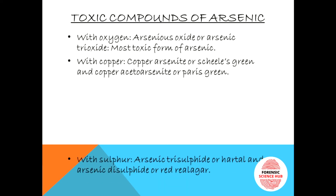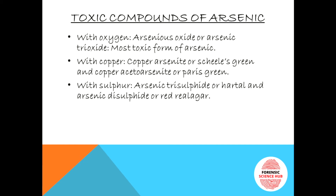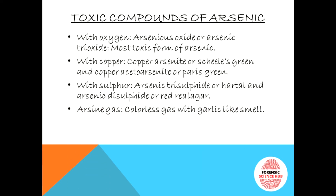With sulfur, arsenic forms arsenic trisulfide and arsenic disulfide. Arsenic trisulfide is also known as hartal or yellow orpiment, and arsenic disulfide is also called red realgar. Red realgar is also used as a coloring pigment and in making fly paper.